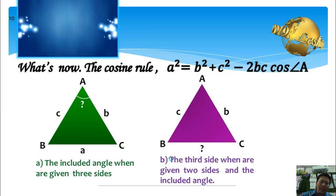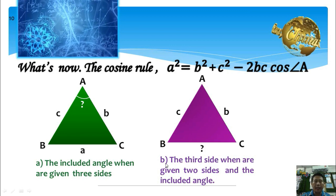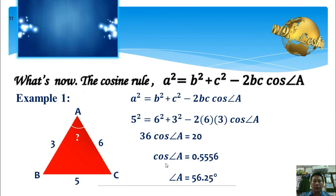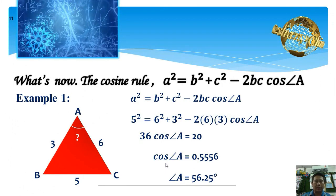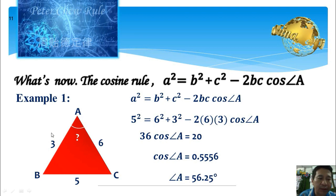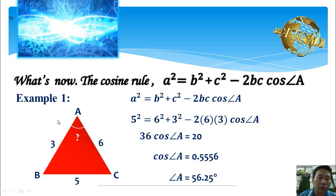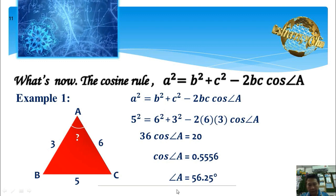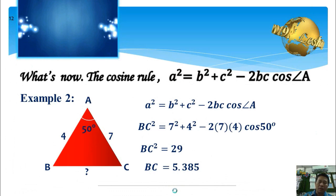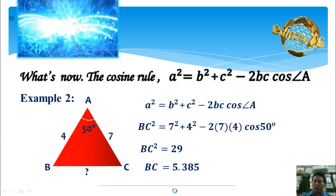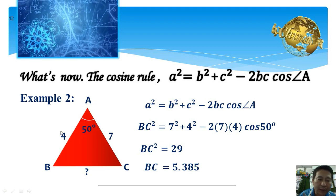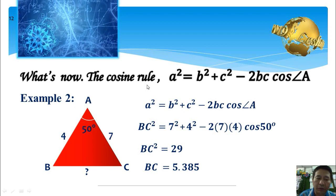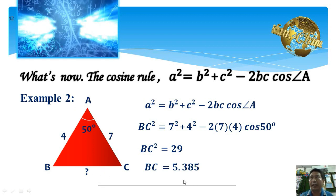Therefore, we need to learn another important rule to solve the above problem — the cosine rule. When we know the three sides of a triangle, we can use the cosine rule to find the included angle. When we know three sides 3, 5, and 6, we can use the cosine rule to find angle A, getting 36.25 degrees. Moreover, when we know two sides and the included angle, we can use the cosine rule to find the third side. For sides 4 and 7 with included angle A of 50 degrees, the third side BC is 5.385.